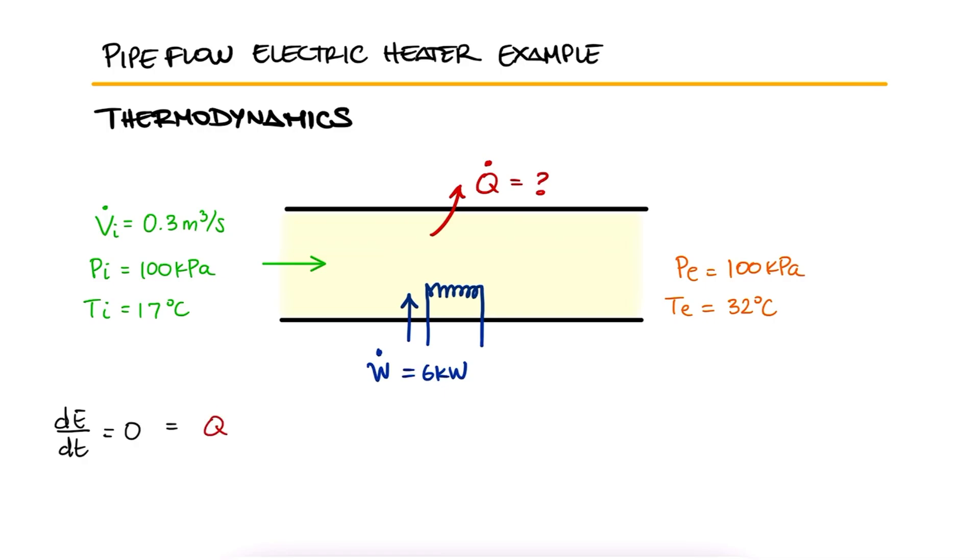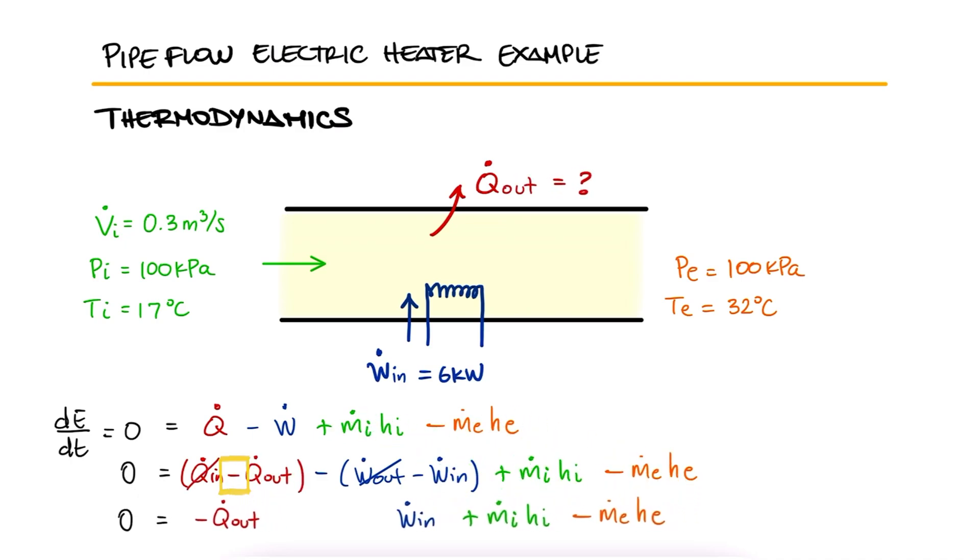We start by using the equation we derived in the main lecture video for Pipe Flow. In this case, we have work coming in in the form of electric energy, and the question hints at heat being lost, meaning heat out. Therefore, heat out has a negative sign next to it and work in has a positive sign next to it.